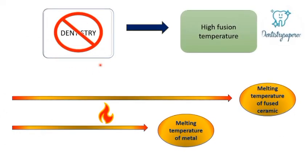Despite its high strength, fused silica is not used in dentistry. The reason is that it has a very high fusion temperature which cannot be attained in a laboratory setup. Even if we could achieve it, the melting temperature of metal is far lower than the fusion temperature of fused silica in its pure form. So when making a metal-ceramic — applying a ceramic covering over a metal coping — the metal would melt away before the ceramic fuses.